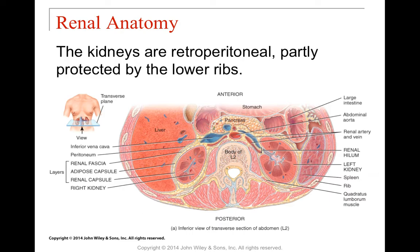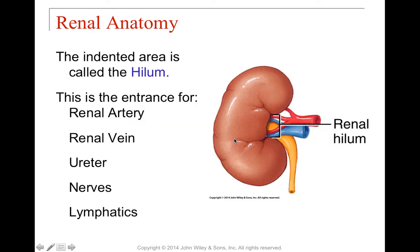The kidneys are located at the midsection around the lower ribs, partially protected by those ribs, found towards your back. In front are all your major organs — your stomach, pancreas, intestines, etc. Here's your abdominal aorta just to orient you. The hilum is where the renal artery comes in, the renal vein comes out, and also where the ureter comes out. We also have a lot of nervous and lymphatic tissue here.